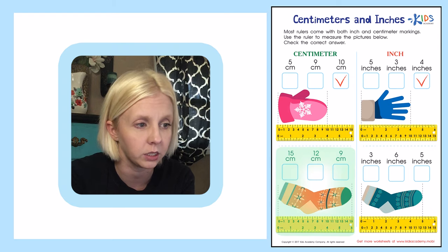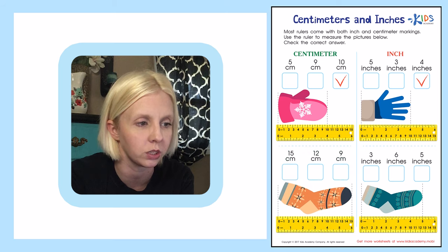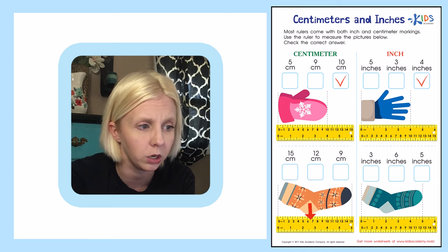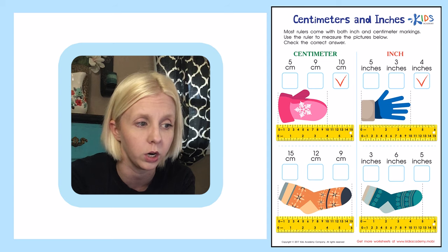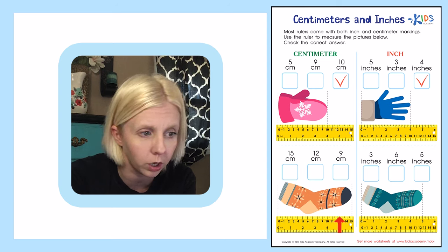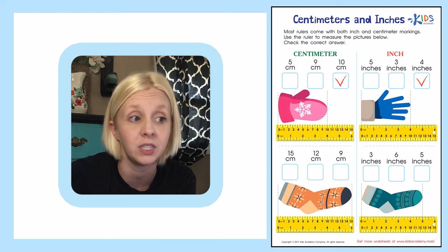The next thing we're measuring is a sock. This time we are also looking for centimeters, so we want the little numbers. We've got our sock lined up at the end of the ruler, we come all the way down, and it lines up right at 15. So it is going to be 15 centimeters, and I'm going to put a check there on 15.